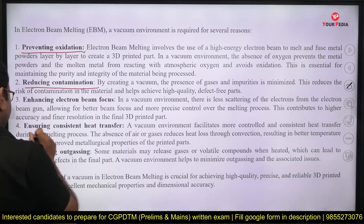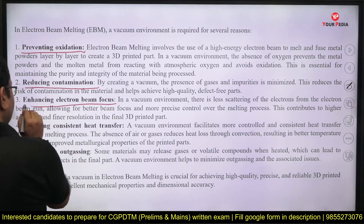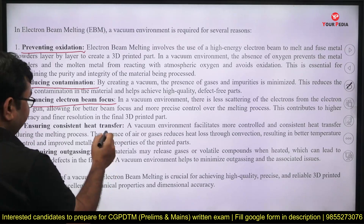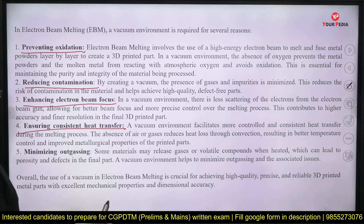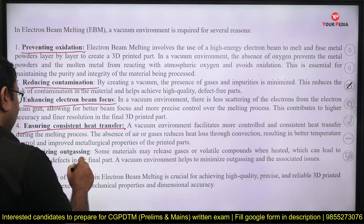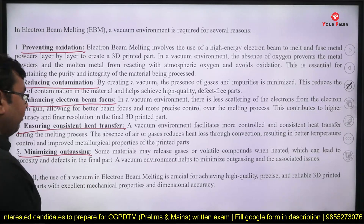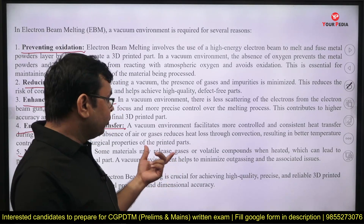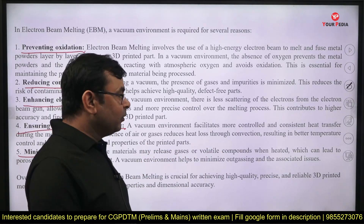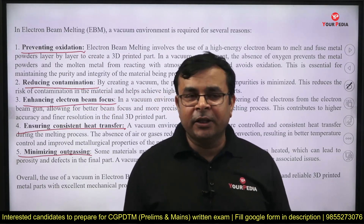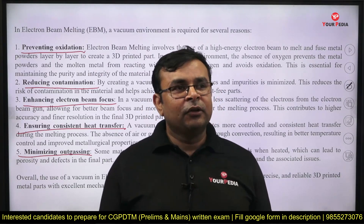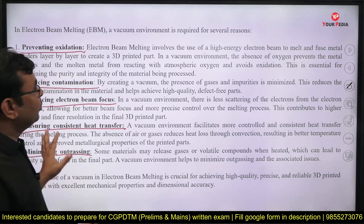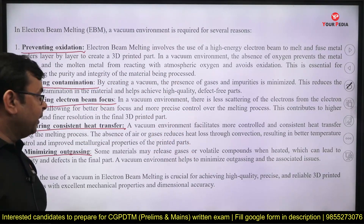Enhancing heat transfer — you can also control heat transfer by using a vacuum chamber. In a vacuum chamber, heat transfer takes place only by radiation. Next is minimizing outgassing. Some materials may release gases and volatile compounds. By using a vacuum chamber you prevent the mixing of those gases with oxygen and prevent fire hazards. These are the few reasons for which you select a vacuum chamber for electron beam welding.